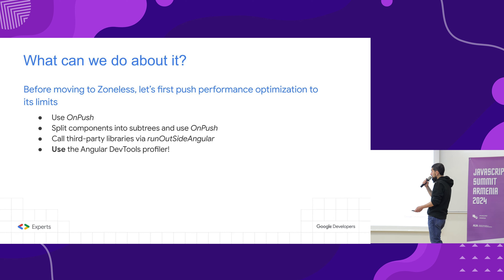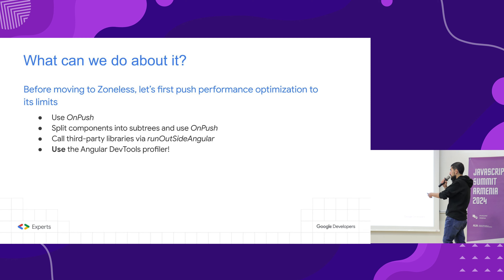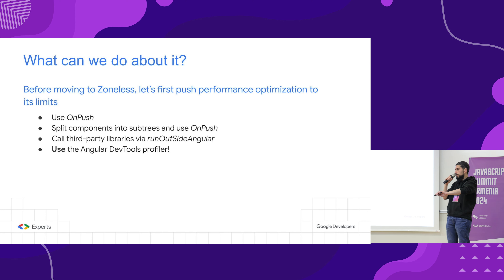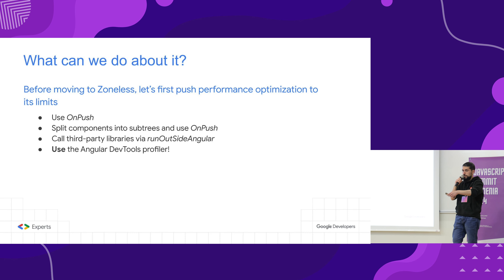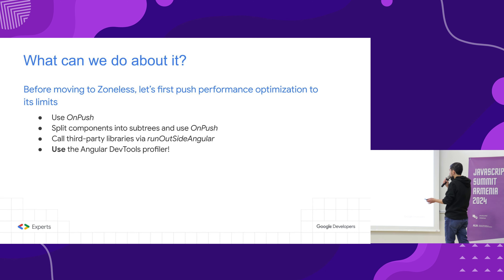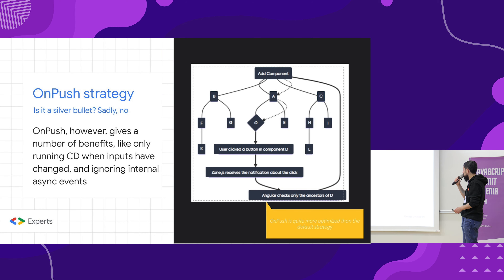If we use third-party libraries, we can use the NgZone reference and call runOutsideAngular. If we register third-party libraries — like Chart.js or whatever we are using with our Angular app — they register event listeners. We don't want Zone.js to look at those third-party libraries because we don't care about it. Those libraries manage themselves. We don't need Zone.js to go there and perform any checks. And of course we can use the Angular DevTools profiler to see where we have problems — too many async events.